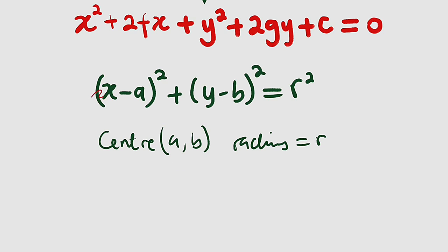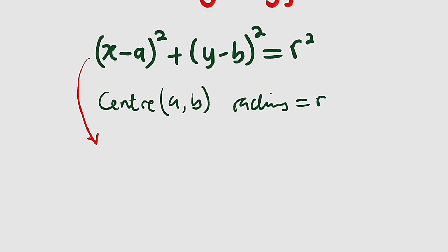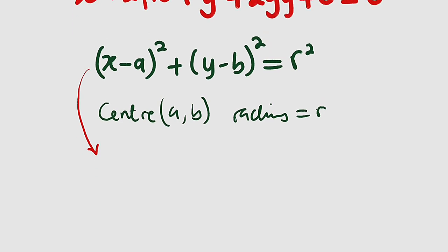First of all let us expand it. If we expand the left hand side which is (x minus a) squared, take the first term x, you square that, minus because of that negative sign. Two times the first term times the second term we have 2ax. Then plus a squared.